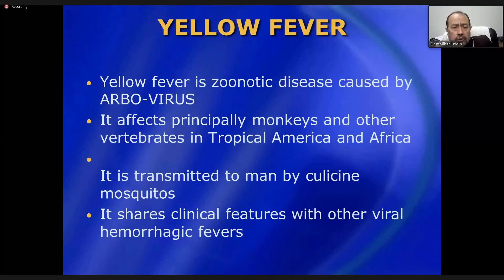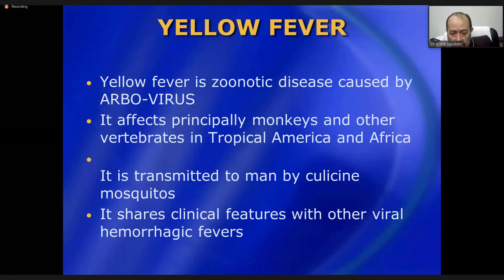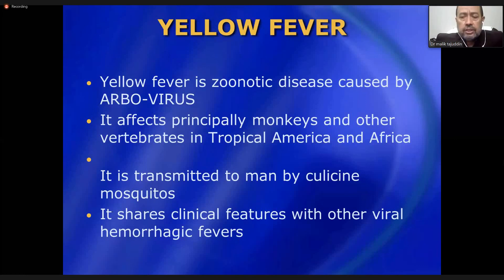Yellow fever is a zoonotic disease caused by an arbovirus, affecting primarily monkeys and other vertebrates in tropical America and Africa. It is transmitted by the bite of the Culex mosquito and shares clinical features with other viral hemorrhagic fevers, so the same precautions apply.